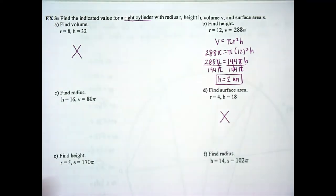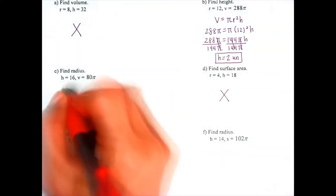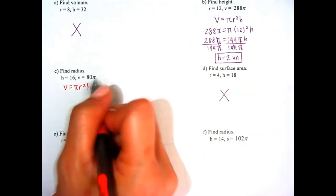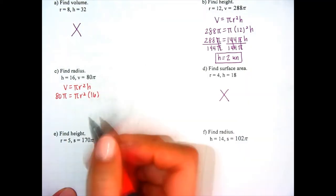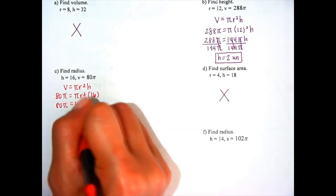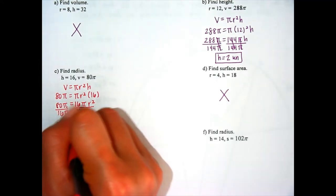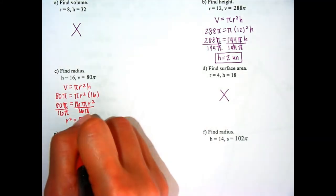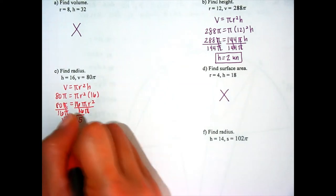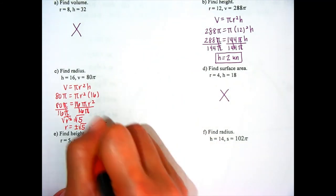Part C: find the radius given the height and the volume. Using volume formula πr²h, we plug in 80π equals πr² times 16. Rewriting as 16πr² and dividing each side by 16π, the π's cancel and we get r² equals 5. Taking the square root of both sides gives r equals plus or minus √5, but since radius can't be negative, the radius is √5 units.